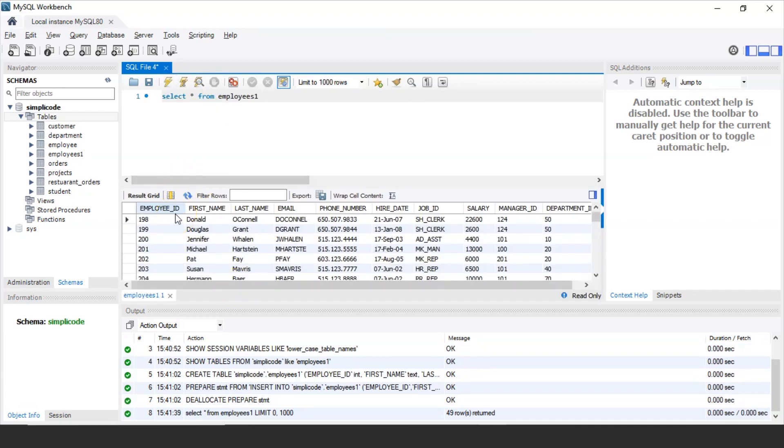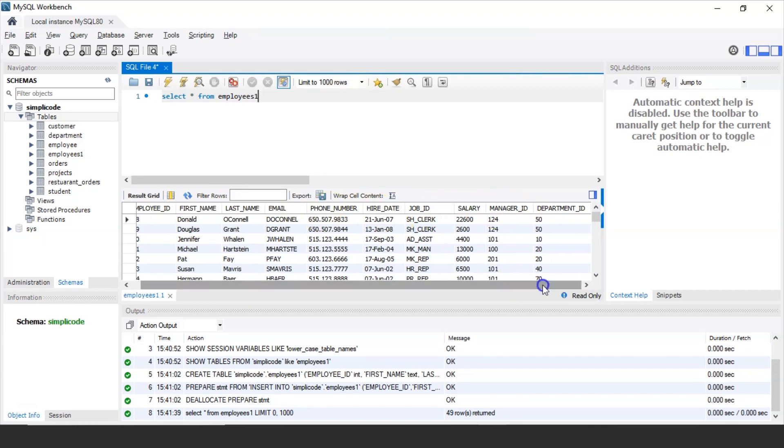So as you can see our employees1 table has employee ID, first name, last name, email, phone number, hiring date, job ID, salary, manager ID and finally department ID.